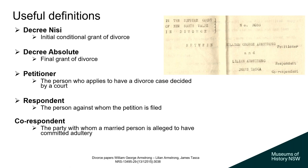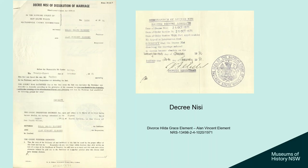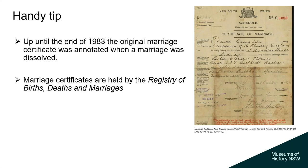The correspondent is the party with whom a married person is alleged to have committed adultery. In the image shown, the petitioner is William George Armstrong, the respondent is Lillian Armstrong, and the co-respondent is James Tasker — meaning William initiated the divorce against his wife Lillian, with James Tasker as the person with whom Lillian committed adultery. We also have a decree nisi for the divorce of Hilda Grace Element and Alan Vincent Element in 1971, where Hilda is the petitioner and Alan is the respondent.